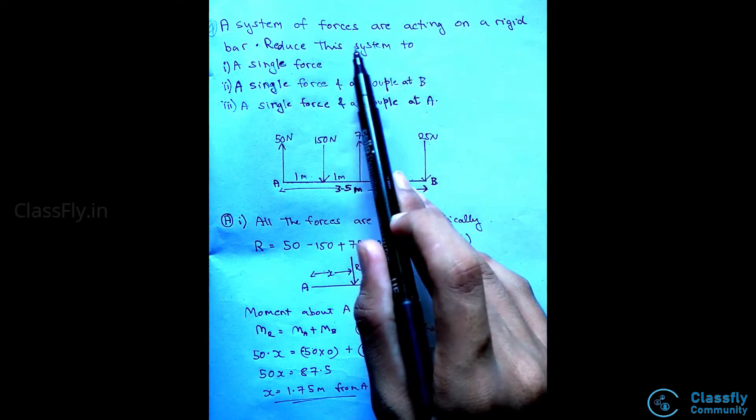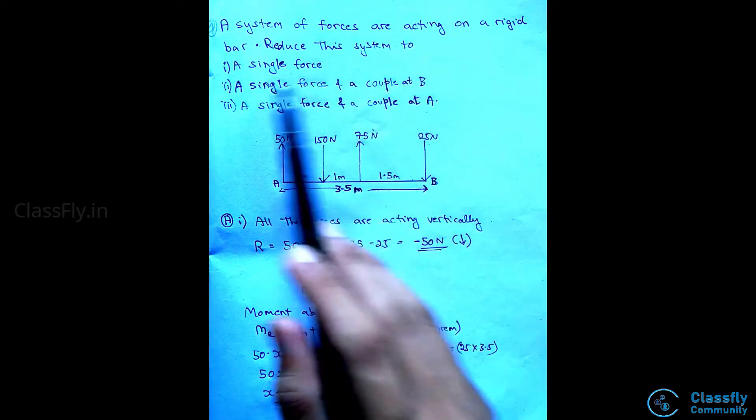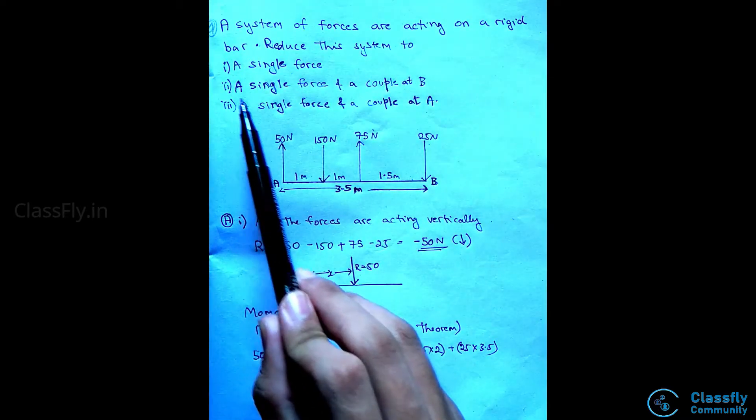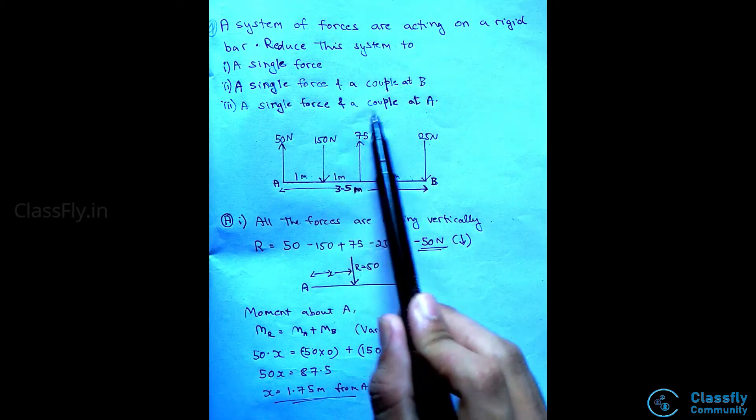A system of forces acting on a rigid body are shown. Reduce this system to: 1. A single force, 2. A single force and a couple at B, 3. A single force and a couple at A.